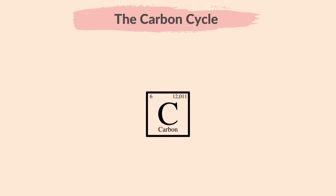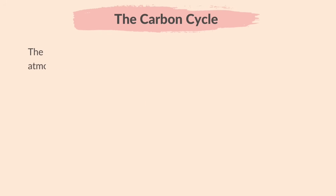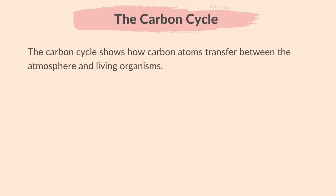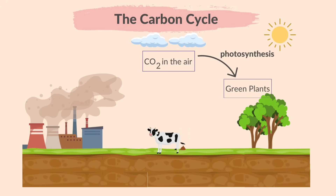First, we will learn the Carbon Cycle. Carbon is an important element which forms the main part of molecules in living organisms. The Carbon Cycle shows how carbon atoms transfer between the atmosphere and living organisms. Plants take in carbon dioxide from the atmosphere during photosynthesis, which means carbon is removed from the atmosphere.